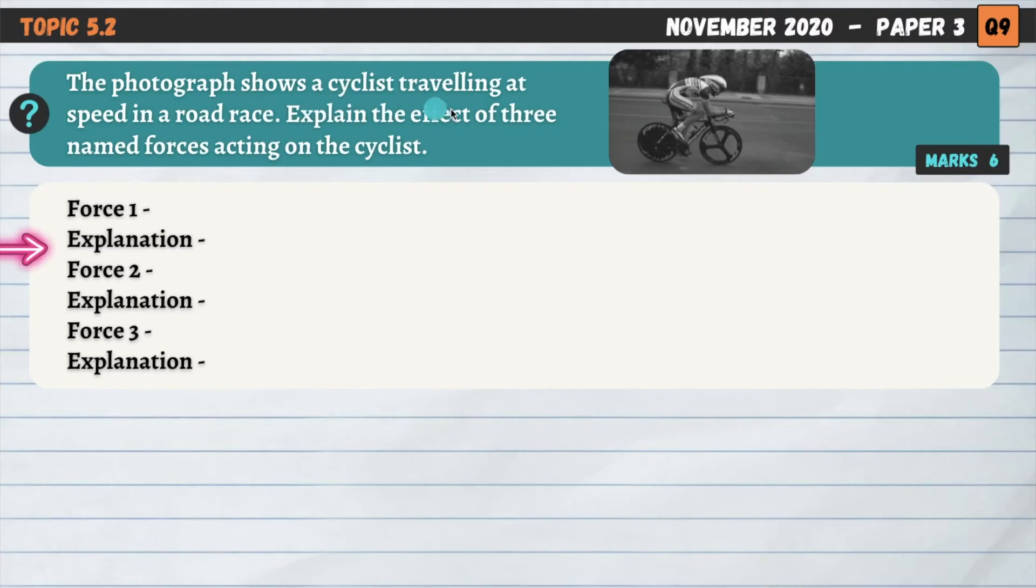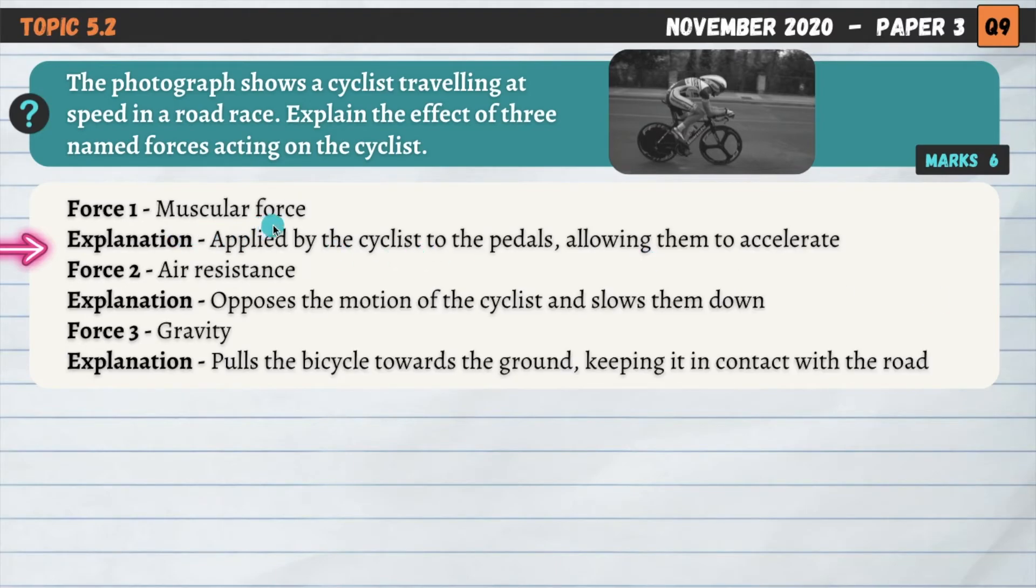The photograph shows a cyclist traveling at speed in a road race. Explain the effect of three named forces acting on the cyclist. So we've got almost the same question coming up for a third time already. This is paper three from November 2020. This one's worth six marks. So it's three named forces this time. So let's go through this one. And I've gone for muscular force again, air resistance again, and gravity for this one. So muscular force, how does that impact or act on the cyclist? Well, it's applied by the cyclist to the pedals. They obviously produce force in their muscles, in their legs predominantly, their hamstrings and glutes. And that allows them to accelerate. So when we apply that force to the pedals, we speed up.